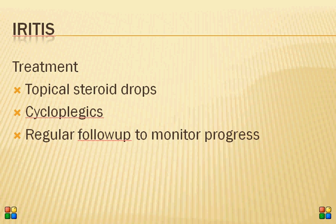The mainstay of treatment is topical steroid drops — either dexamethasone or prednisolone — given initially every one hour, then gradually tapered over days to weeks depending on the response. Cycloplegics are used to paralyze the ciliary muscle, which helps reduce pain, prevents the development of synechiae, and can break existing adhesions. Regular follow-up is very important to monitor progress and adjust the frequency of steroid drops according to the severity of inflammation.